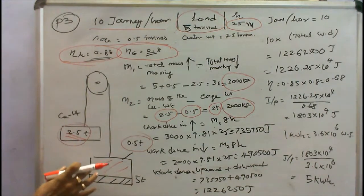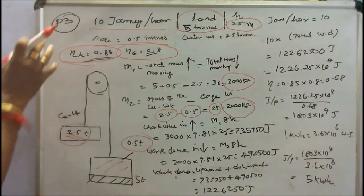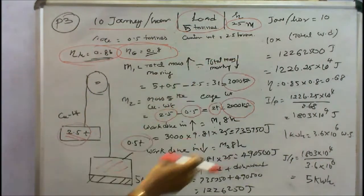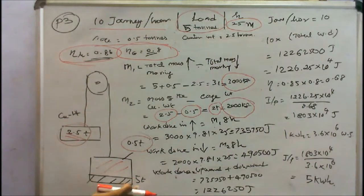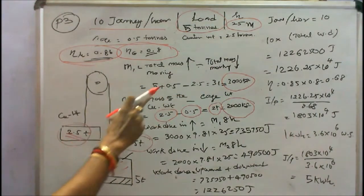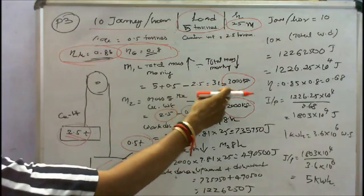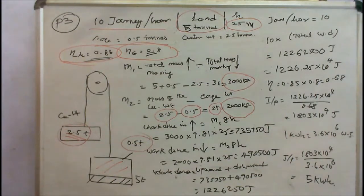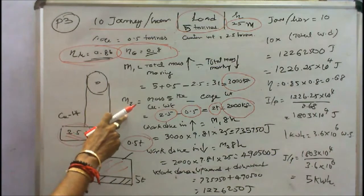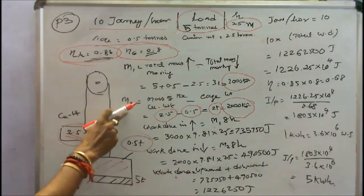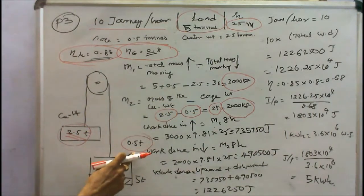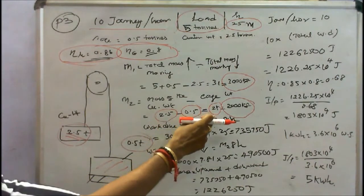First we have to find the mass - total mass moving in the upper direction minus total mass moving in the downward direction. While upward: 5 plus 0.5 equals 5.5. In the downward, the counter weight is 2.5. 5.5 minus 2.5 equals 3 tons, that equals 3000 kg. That is M1. Similarly, what is the mass in the downward direction? M2 equals mass of counter weight 2.5 minus cage weight 0.5 equals 2 tons, that equals 2000 kg.